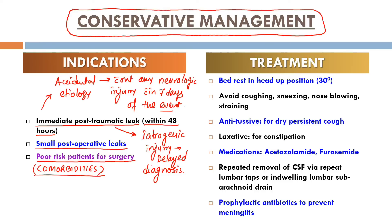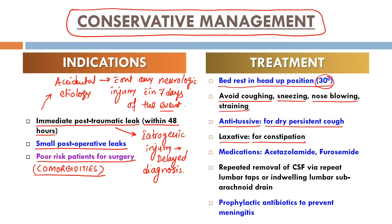In conservative management of CSF rhinorrhea, the patient's bed should be kept in a head-up position of about 30 degrees. The patient is asked to avoid coughing, sneezing, nose-blowing, and straining. Antitussives may be given for dry persistent cough, laxatives to avoid constipation, and medications to reduce intracranial pressure may be given, such as acetazolamide or furosemide.